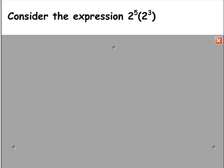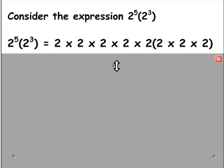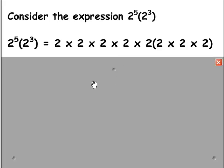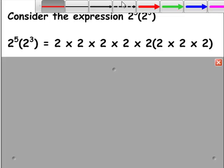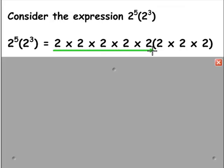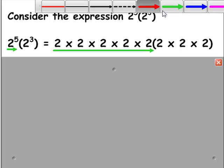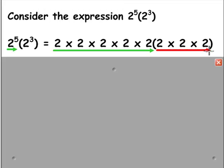Consider the expression 2 to the power of 5 multiplied by 2 to the power of 3. If we write this out in expanded form as a repeated multiplication, we would find that 2 to the power of 5 multiplied by 2 to the power of 3 consists of 5 repetitions of multiplying by 2 and 3 more additional repetitions of multiplying by 2.